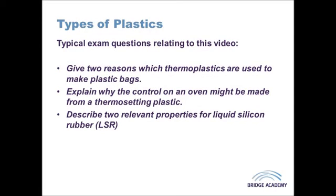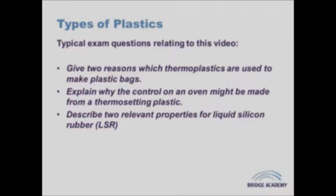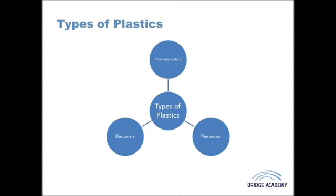In this video I'm discussing the three main types of plastics. I'll be talking about polymers, but also materials that have the same sort of properties as polymer-based plastics but are not falling into the polymer category. The three main types of plastics are thermoplastics, thermosetting plastics, and thermoplastic elastomers, or elastomers as they might be shortened to.